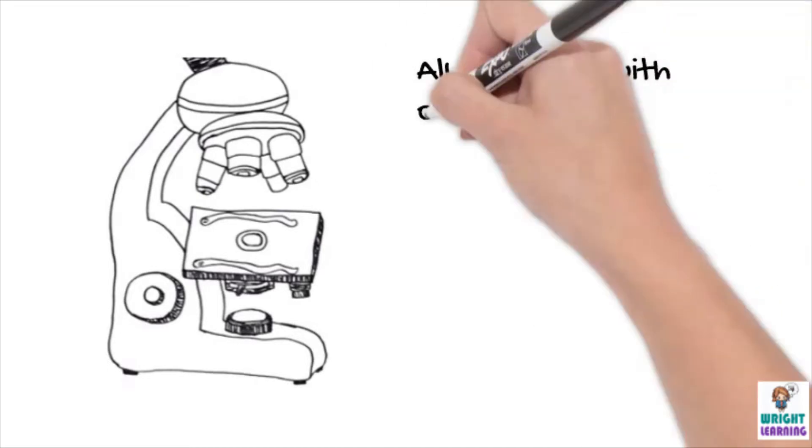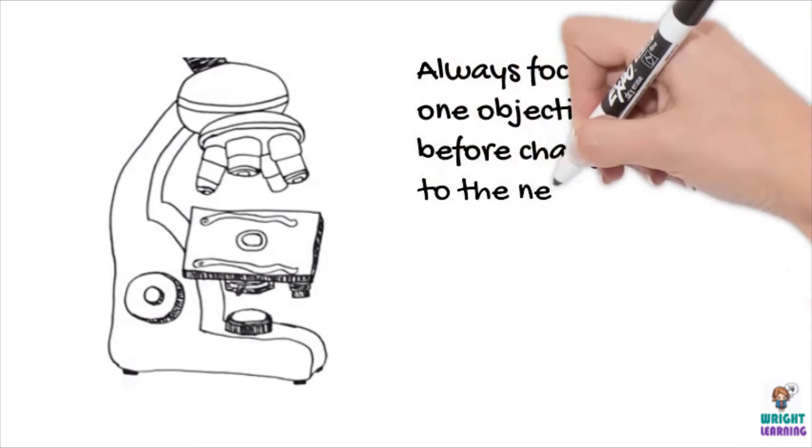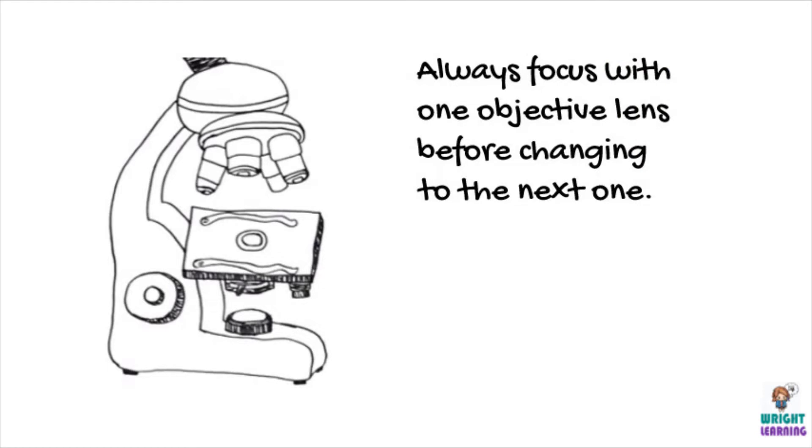If you want to increase the magnification, use the revolving nosepiece to set the next more powerful objective lens in place. Only ever increase the magnification level by one objective lens at a time. Make sure you focus with that objective lens first, before moving on to the next one. Otherwise focusing can become really difficult.